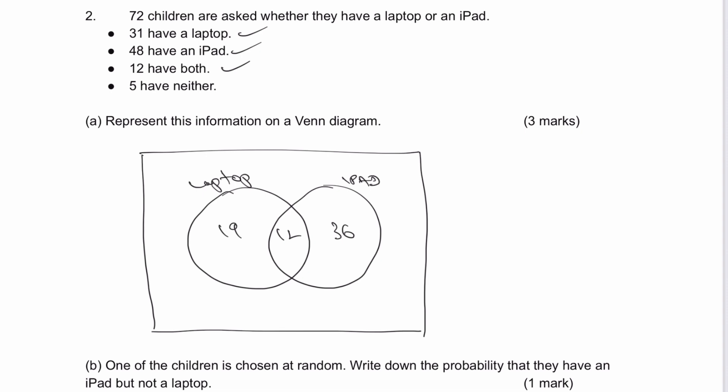Finally, 5 have neither, so that's going to be in the universal set there. And that would represent the information on a Venn diagram.